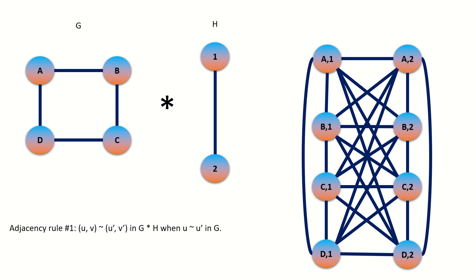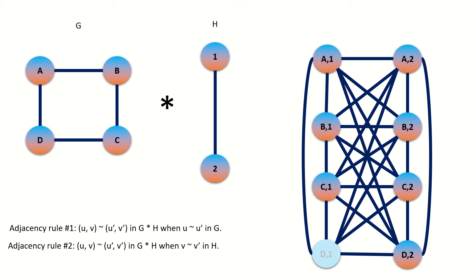Finally, the first adjacency rule tells us to connect vertex D2 to A1, A2, C1, and C2. The second adjacency rule tells us to connect vertex D2 to A1, B1, C1, and D1. This is our final result.